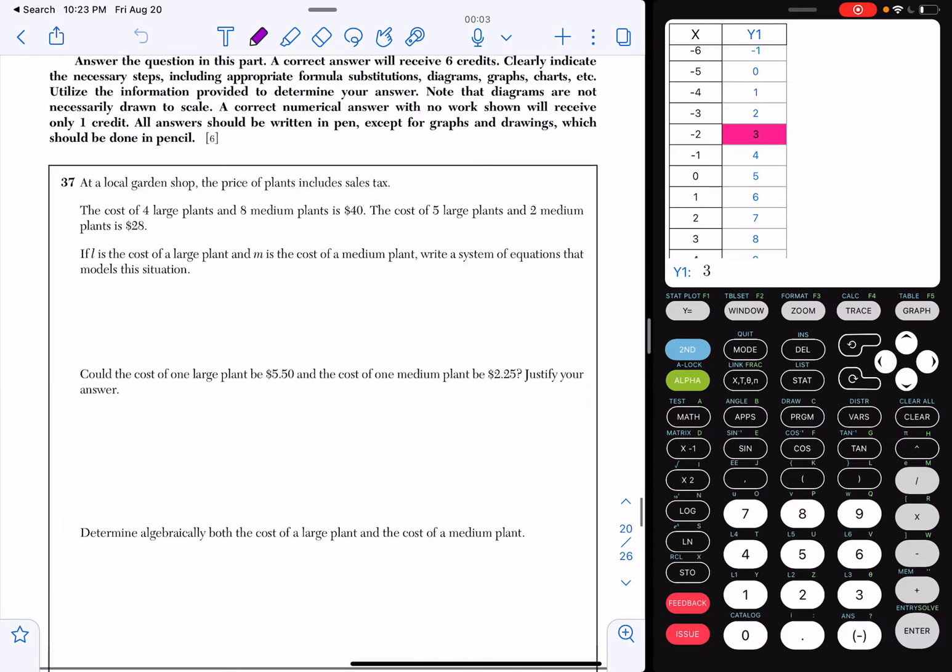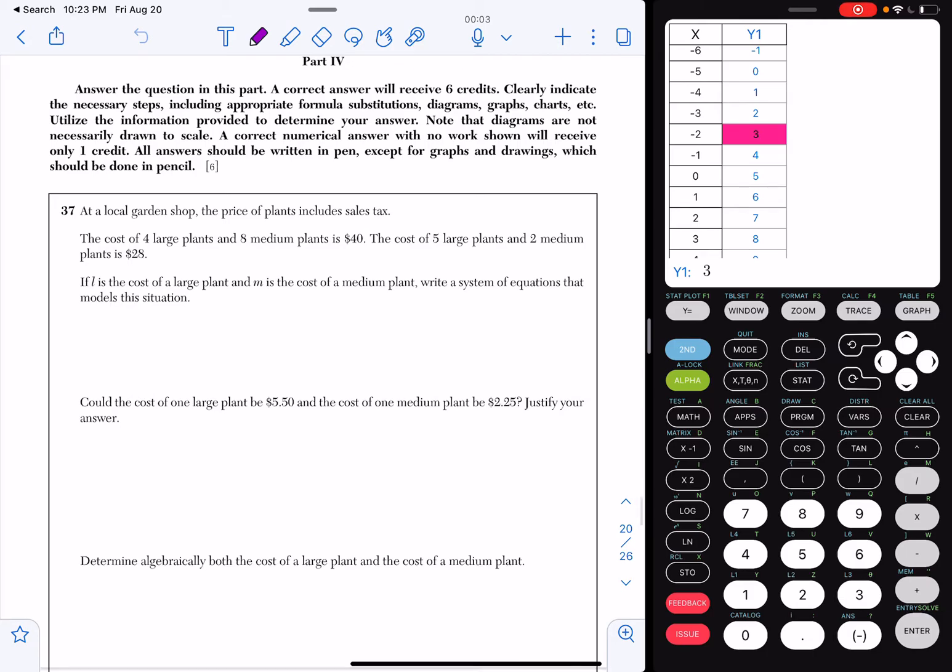Okay, question number 37. This is a six-point question. Make sure that you answer this question because 99% of the time it is a systems of equations and I know you know how to solve a system. So at a local garden shop, the price of plants includes sales tax. The cost of four large plants and eight medium plants is $40. The cost of five large plants and two medium plants is $28.